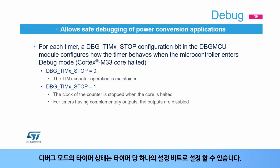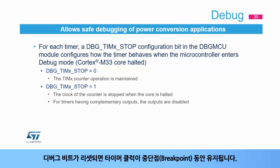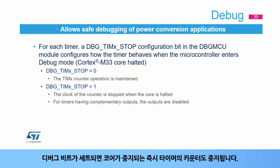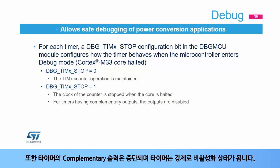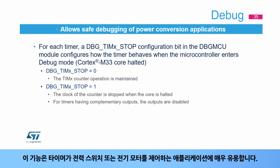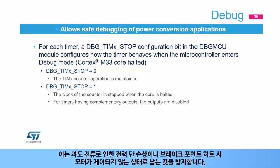The timer's state in debug mode can be configured with one configuration bit per timer. If the debug bit is reset, the timer clock is maintained during a breakpoint. If the debug bit is set, the timer's counter is stopped as soon as the core is halted. Additionally, the outputs of timers having complementary outputs are disabled and forced to an inactive state. This feature is extremely useful for applications where timers are controlling power switches or electrical motors, preventing power stages from being damaged by excessive current or motors being left in an uncontrolled state when hitting a breakpoint.